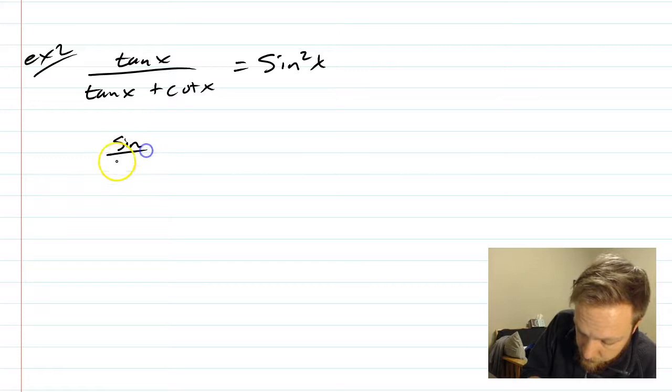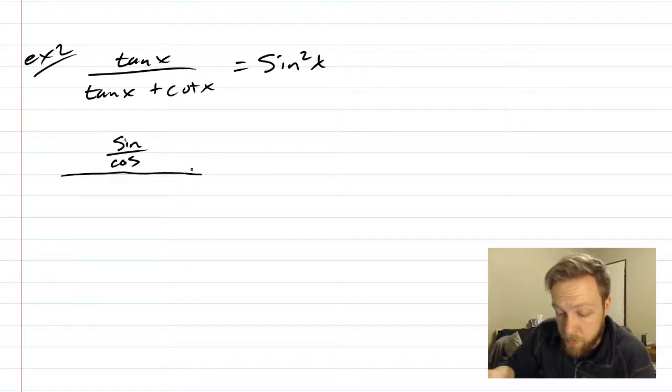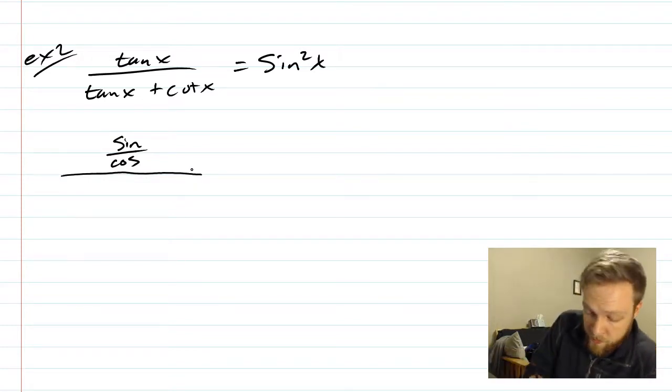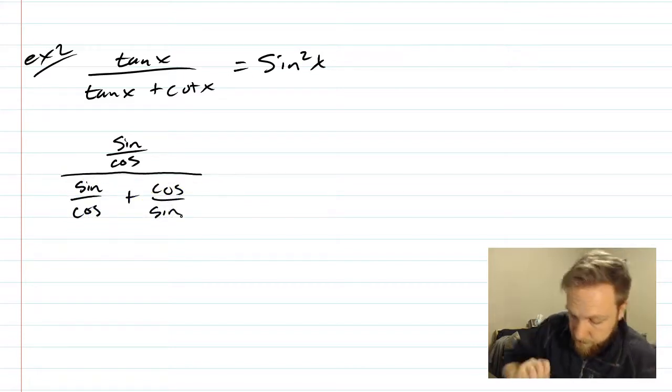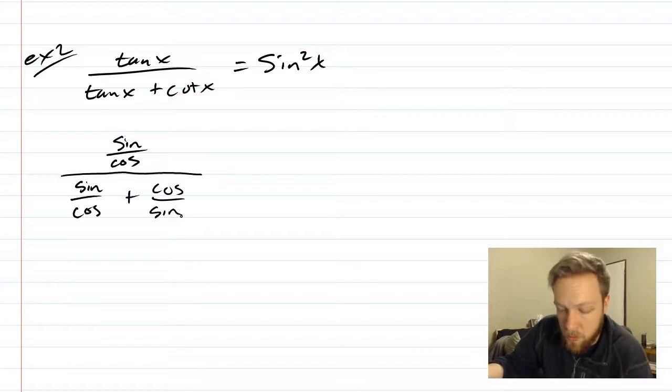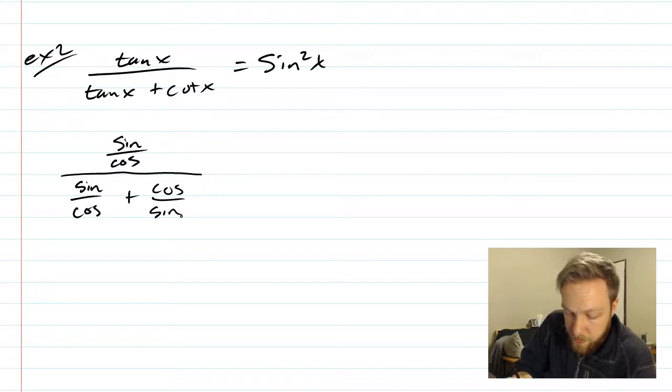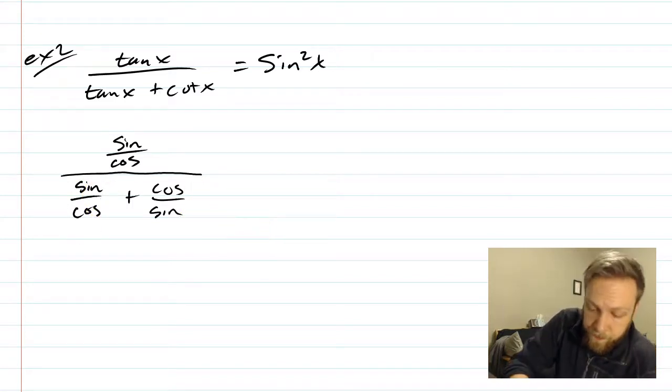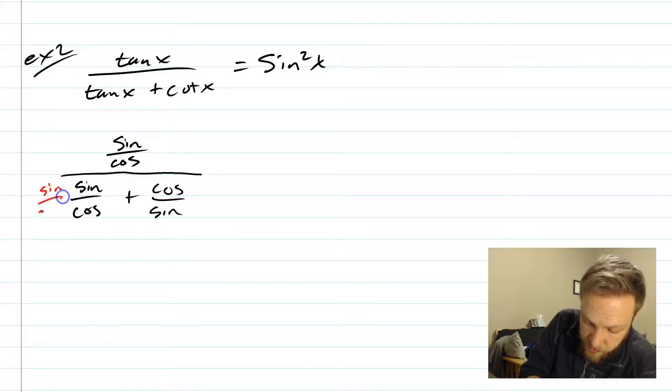So sine over cosine on top, and I know I'm dropping the x, but it's the only variable, so it's just a lot faster sometimes when there's just one variable. Okay, so everything is in terms of sine and cosine. And by the way, there's no really easy way to know when you should be doing that or not. Sometimes it helps, sometimes it doesn't. So what I say is if you change it to sine and cosine and it doesn't help you, then do something else.